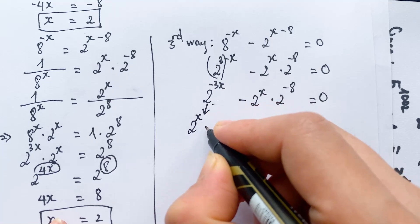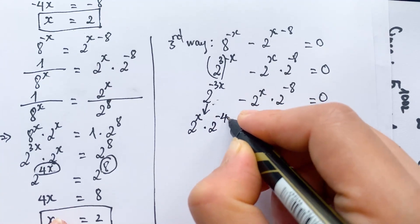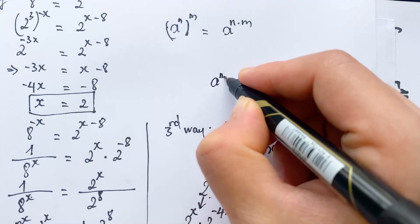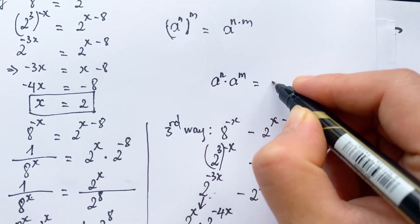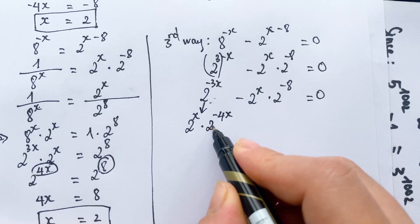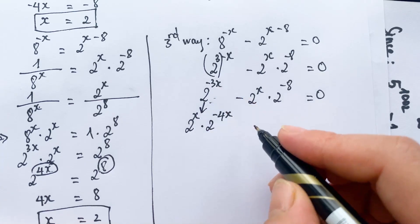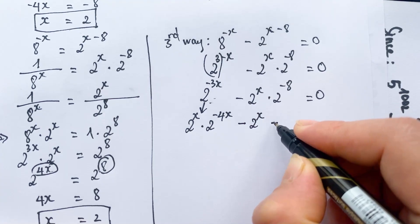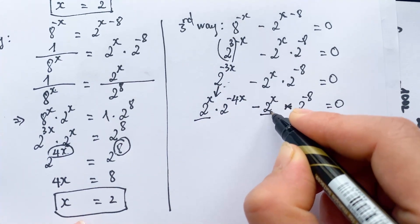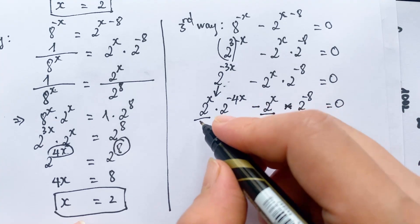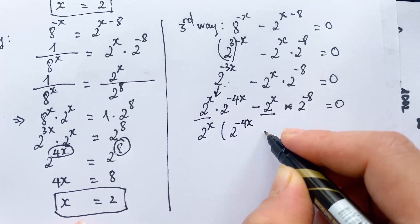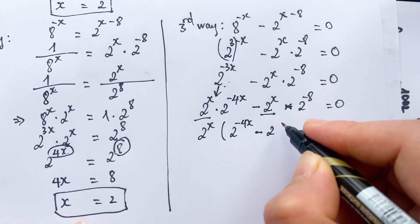For the first term you need to break it down: it equals 2 power x times 2 power minus 4x, because we have the exponential rule a power n times a power m equals a power n plus m. Therefore you can write 2 power x times 2 power minus 4x minus 2 power x times 2 power minus 8 equals zero. Here 2 power x is the common factor — check it out: 2 power x times (2 power minus 4x minus 2 power minus 8) equals zero.